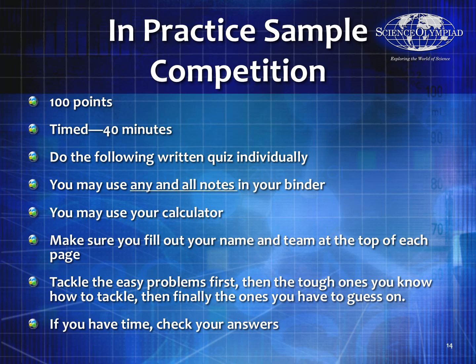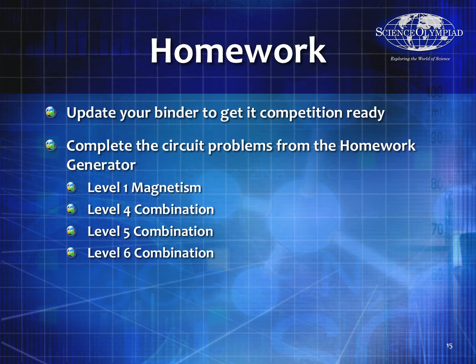Always practice filling out your name and team at the top of each page — if they separate the test, you want to make sure you get points for everything. Always tackle the easy problems first, then the tough ones you know how to tackle, and finally the ones you're guessing on. That will improve your luck. Make sure you get the easy problems and the tough ones right, as you're much more likely to get those right than the really hard ones. If you have time, check your answers — that's also a great thing your partner can do. For homework, update your binder to get competition-ready, and complete the circuit problems from level one magnetism and level four through six combination circuits.